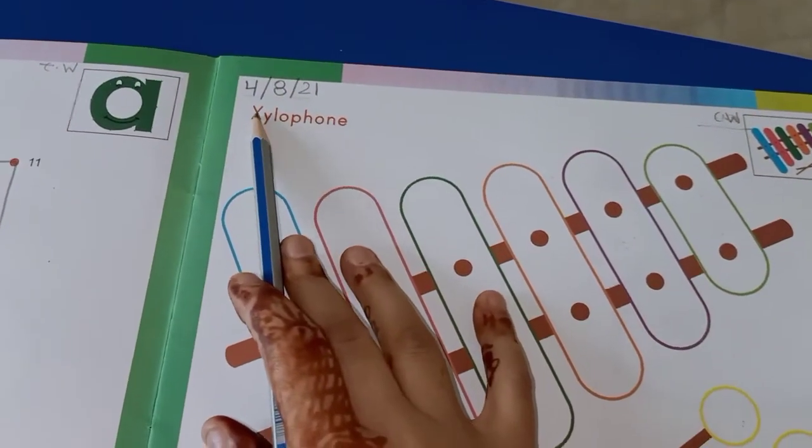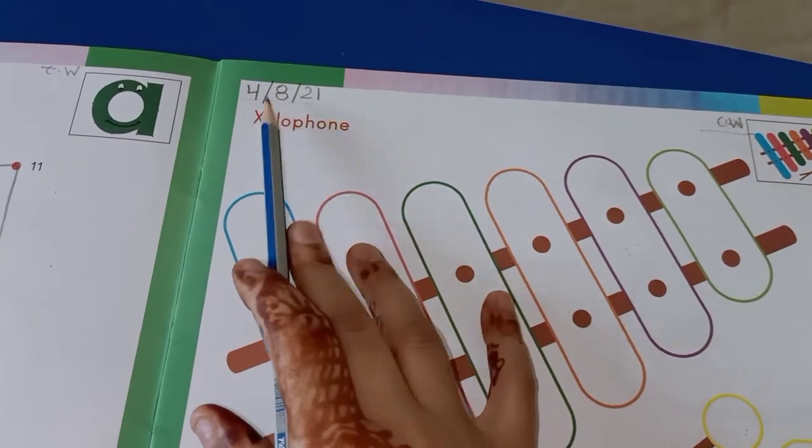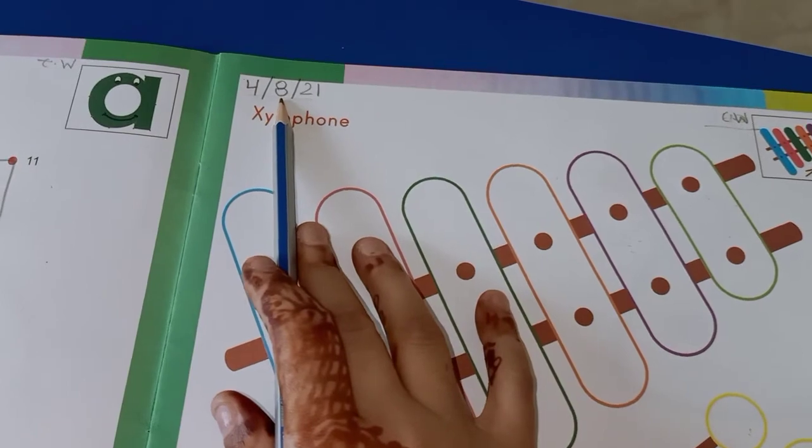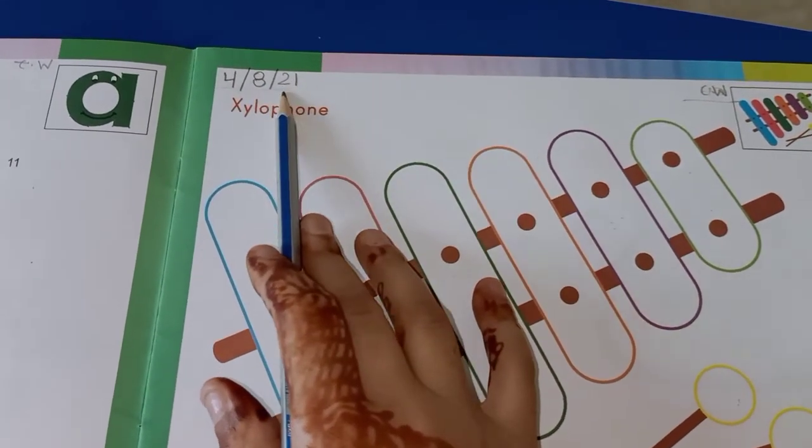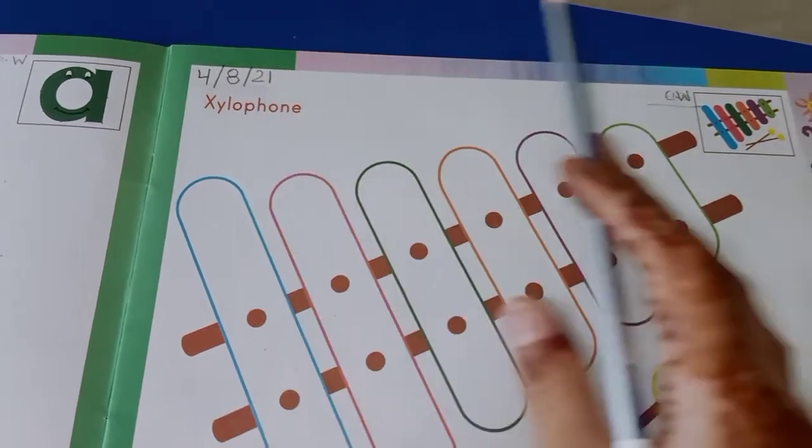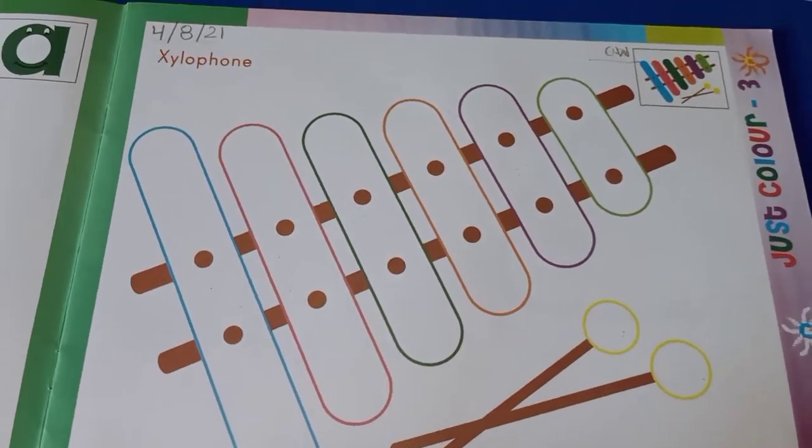First of all, write down the date. Today is the 4th of August. Write down 4th, slanting line, August, 8th month of the year, 8th slanting line, and the year 2021. Write down 2021. And write homework on the right side of the page.